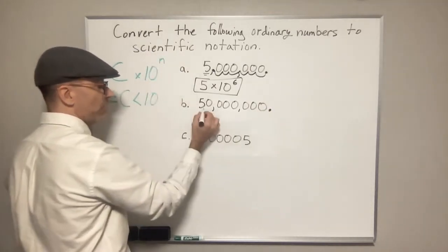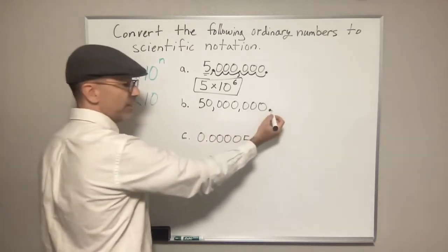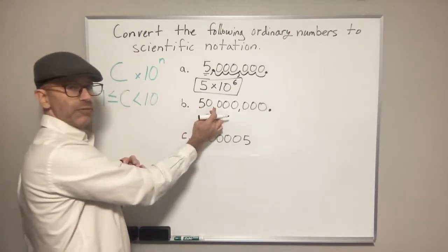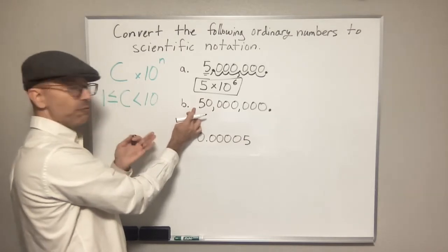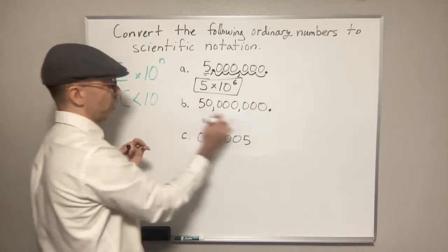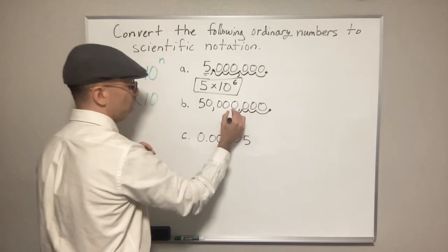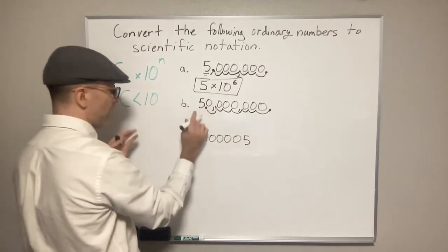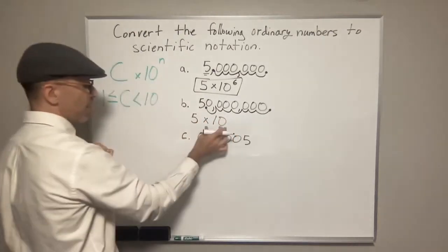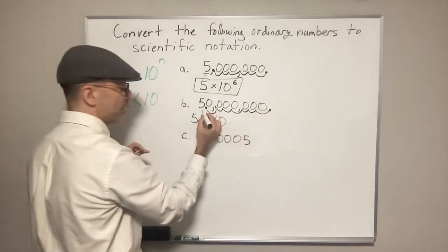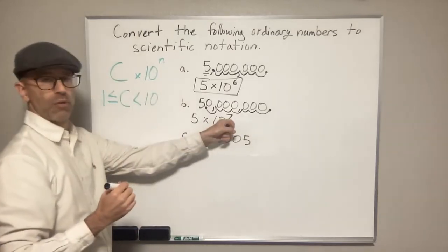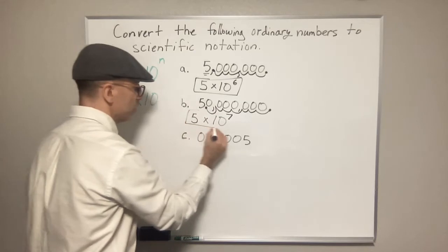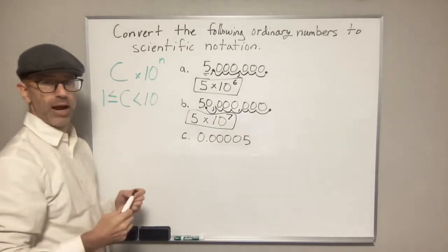What about example B? Same thing — we have our decimal point at the end, and we're going to move it until we only have a number c between one and ten. We move the decimal all the way to the right of the five and stop there. If we stop one too early we'll have 50 — that's too big. If we go too far we get 0.5 — that's too small. So always to the right of the first digit. We move it over one, two, three, four, five, six, seven. So our number is 5 × 10^7 — positive seven because we moved it seven times and we started with a large number.